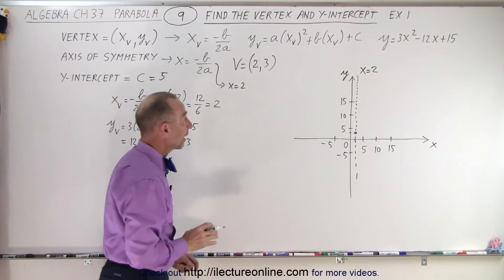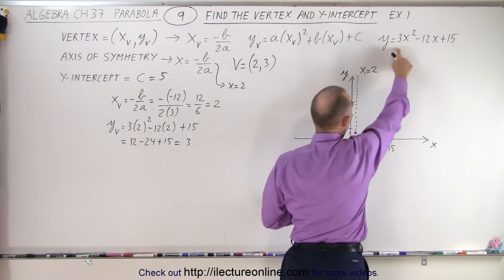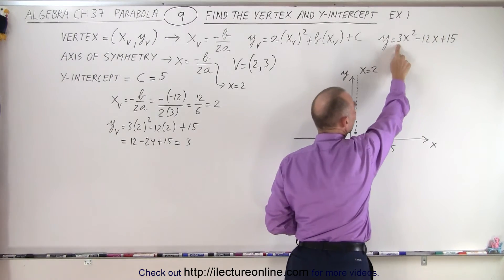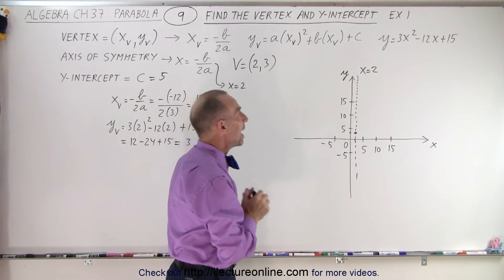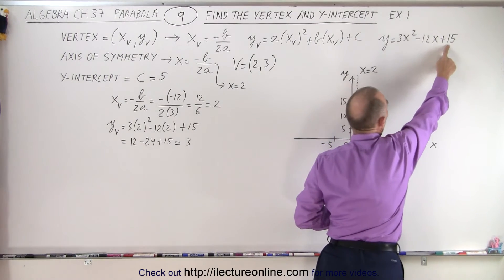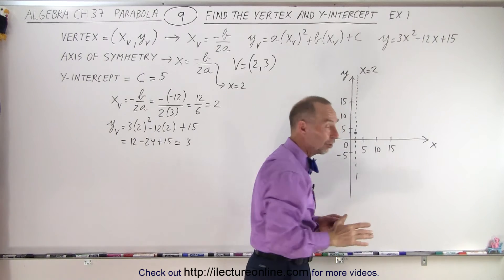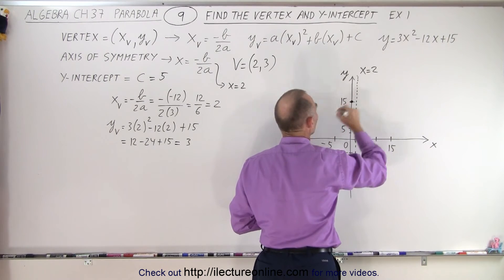Now we need to figure out if the parabola opens upward or downward. Since a is positive, the parabola opens upward. We also see a 3 in front of x², which means the parabola is going to be skinny. And c represents where the graph crosses the y-axis, the y-intercept, at y = 15.